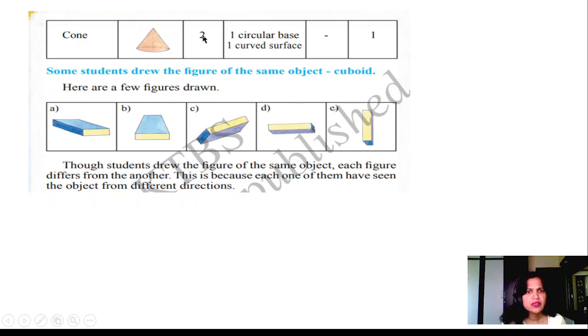Cone. It has 2 faces: one circular base and 1 curved surface. Number of vertices: only 1. No sides.